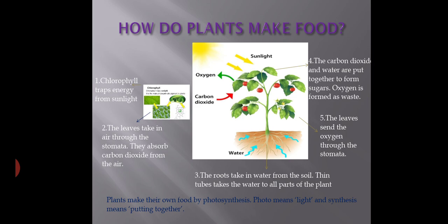First, chlorophyll traps energy from sunlight. Second, the leaves take in air through the stomata and absorb carbon dioxide from the air. Third, the roots take in water from the soil, and thin tubes carry the water to all parts of the plant.